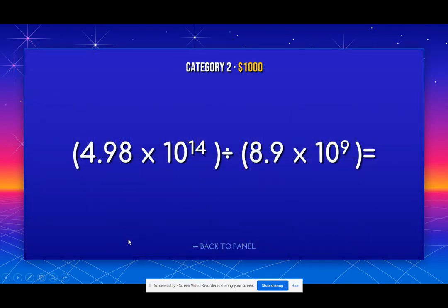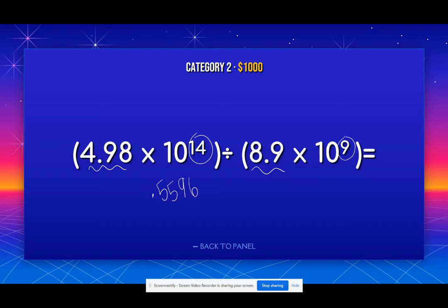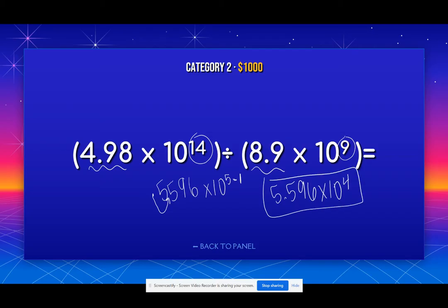Let's take a look at a division problem. For division, we divide our factors — these numbers right here. So we'll do 4.98 divided by 8.9, which gives me approximately 0.5596. Then we take 14 and subtract 9 from it, and we get times 10 to the 5th. We can't have this be less than 1, so we move it to the right. If you move to the right, you subtract 1, so you get 5.596 times 10 to the 4th power. It's all about memorizing the rules and being able to apply them properly.